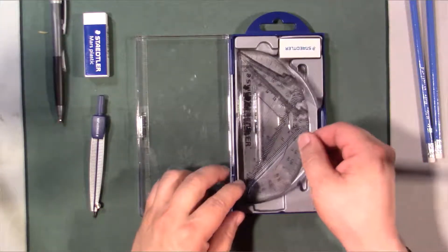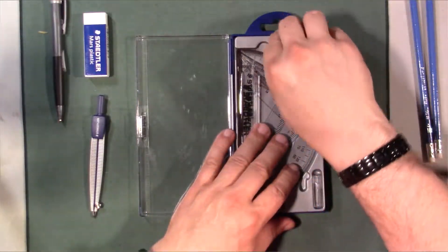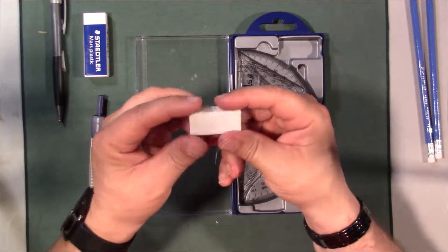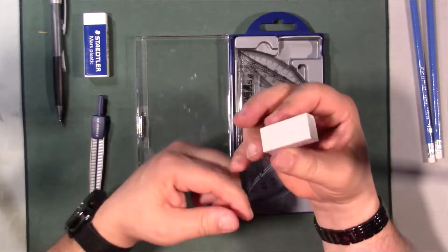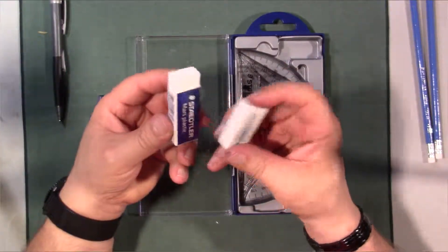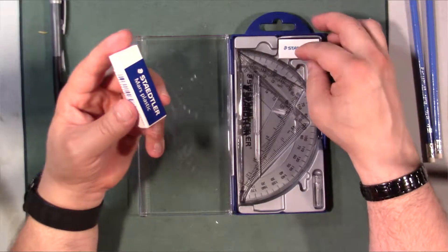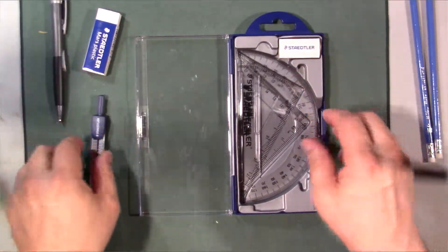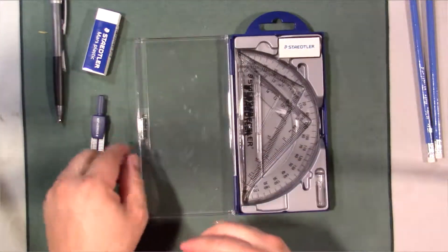So you got the protractor that fits nicely on the case here, and you got the eraser which is sealed. I'm pretty sure the eraser is the same thing as this, so I'm going to just keep that sealed.